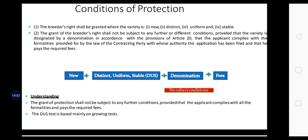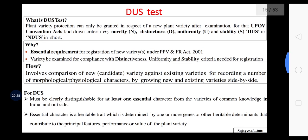Now, how is protection of plant varieties done? The breeder's right shall be granted where the variety is New, Distinct, Uniform and Stable — that is the DUS test. The grant of protection shall not be subject to any further conditions provided that the applicant complies with all formalities and pays the required fees. The DUS test is based mainly on growing tests. Varietal protection can only be granted in respect of a new plant variety after examining for UPOV convention criteria — Novelty, Distinctness, Uniformity, and Stability.